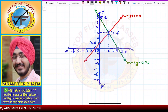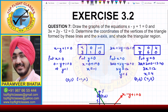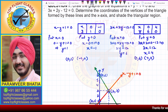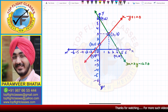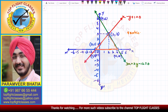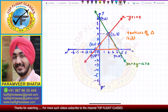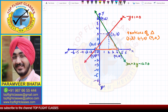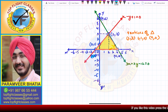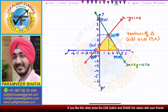The question asks us to determine the coordinates of the vertices of the triangle formed by these lines and the x-axis. Looking at the graph, the triangle is formed with vertices at (2, 3), (-1, 0), and (4, 0). We then shade the triangular region. So the three vertices of the triangle are minus 1 comma 0, 4 comma 0, and 2 comma 3 — which is what the question requires.